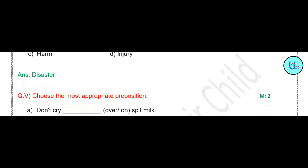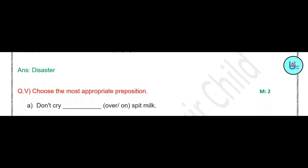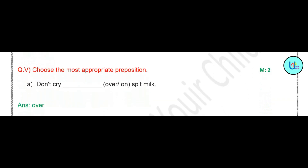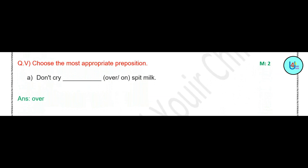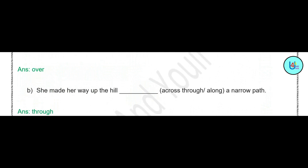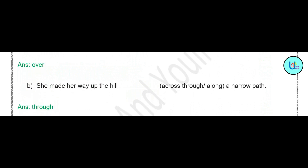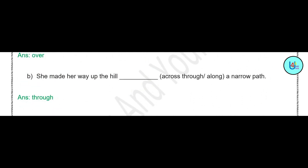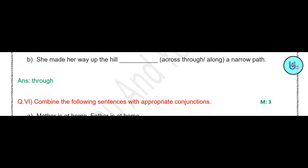Question number 5: choose the most appropriate preposition. 'Don't cry dash over split milk.' The correct answer is 'over' — don't cry over split milk. 'She made her way up the hill dash a narrow path.' Options are: across, through, along. The answer is 'through' — she made her way up the hill through a narrow pass.